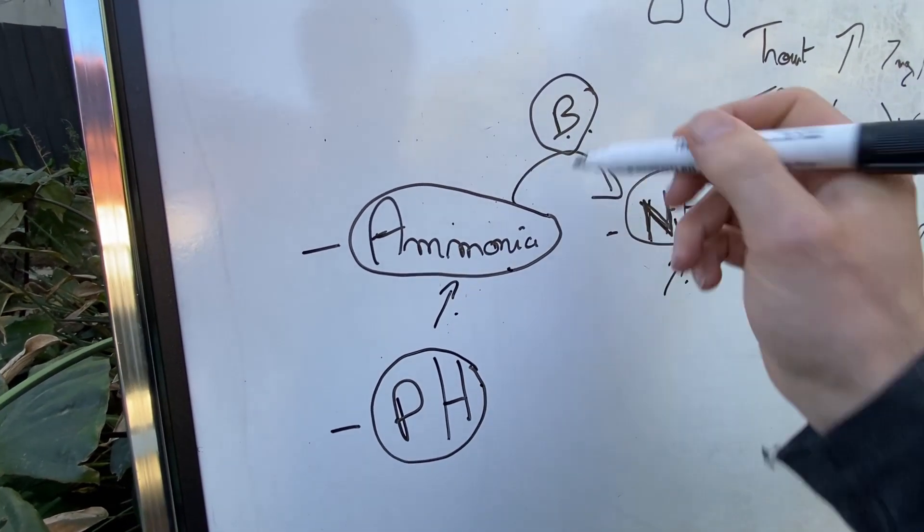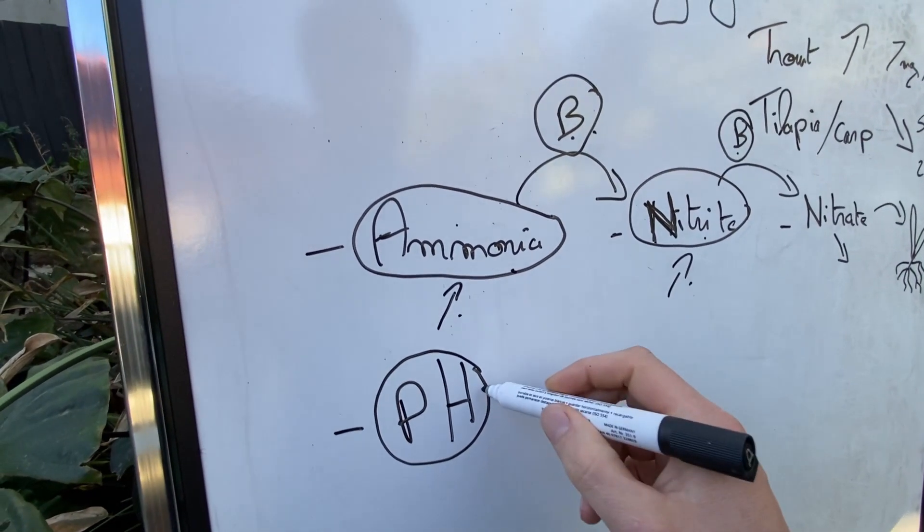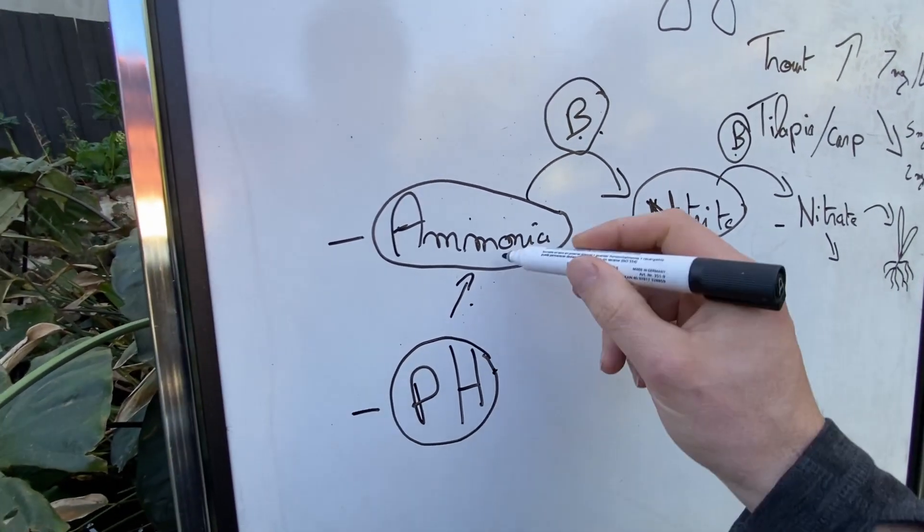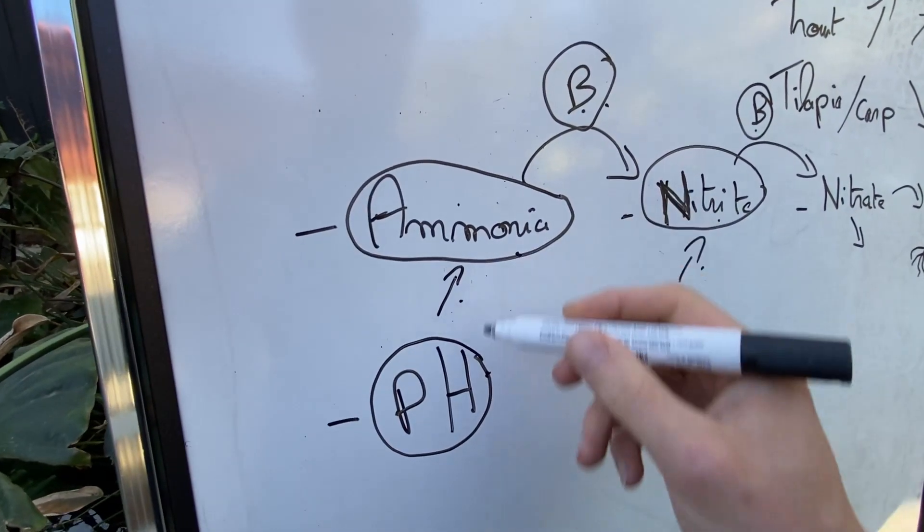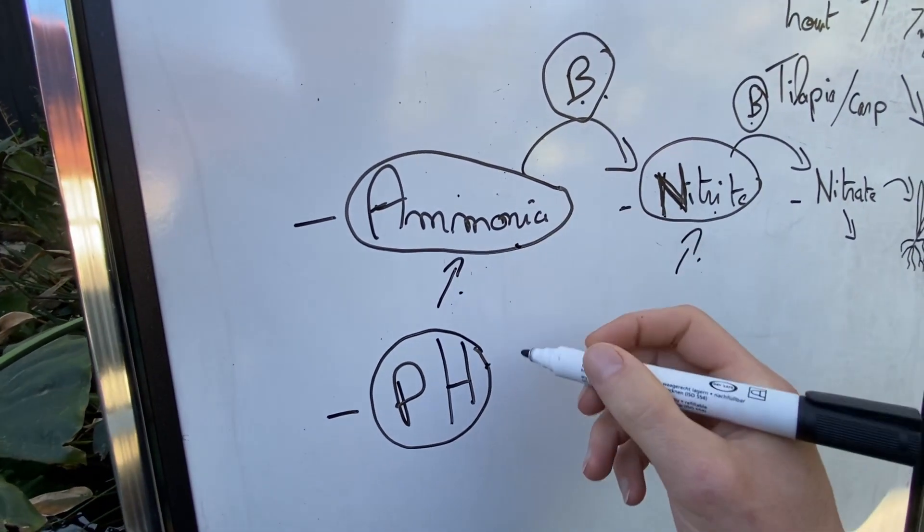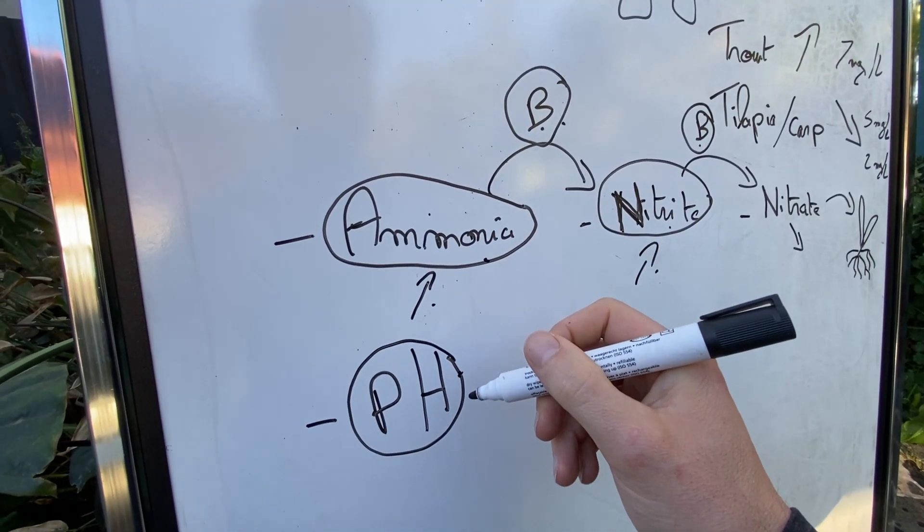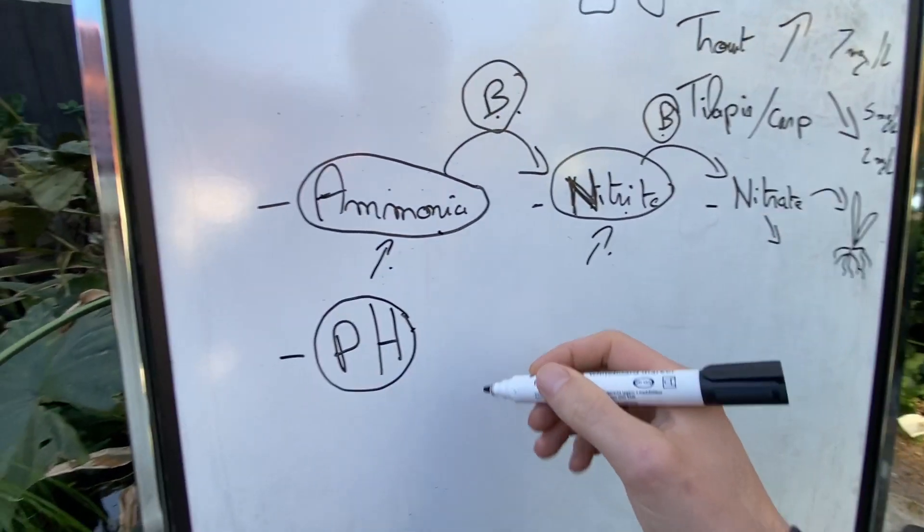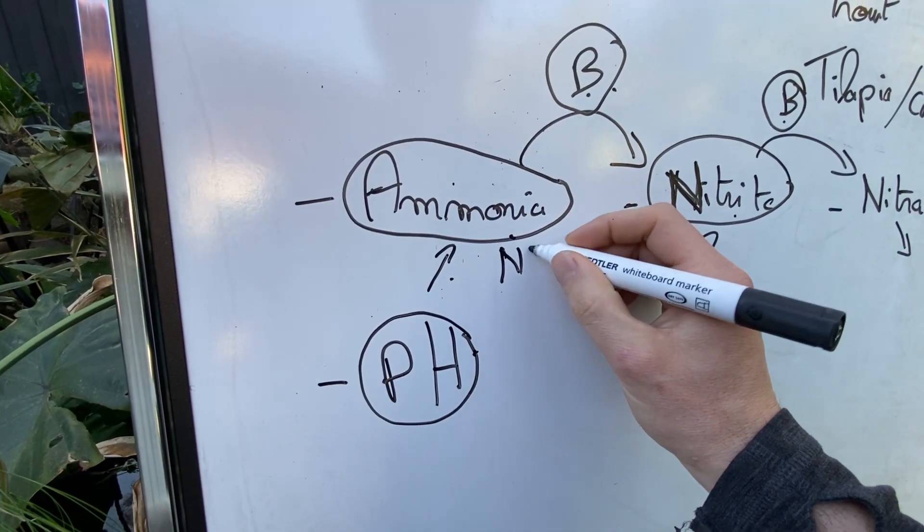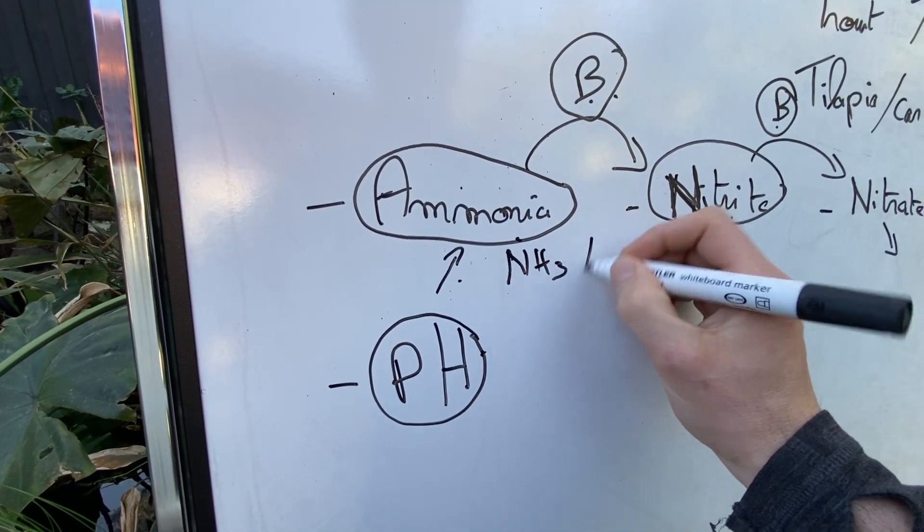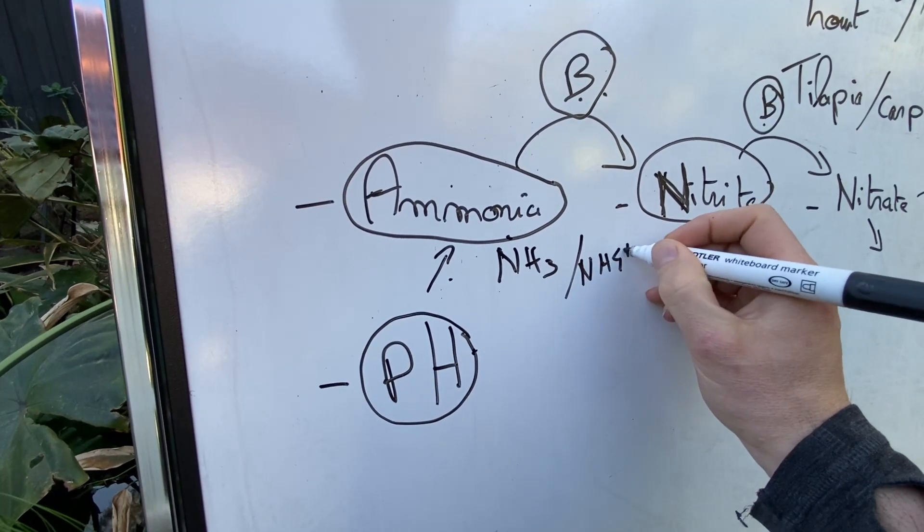So if the pH is too low, the bacteria are not going to work properly. If the pH is too high, it's going to affect the ammonia because, as I explained before, ammonia is not just ammonia. It's ammonia and ammonium. It's a couple. NH3, NH4 plus. Let's write it down. NH3, NH4 plus.